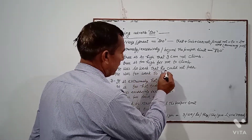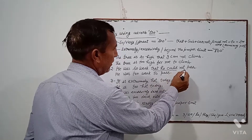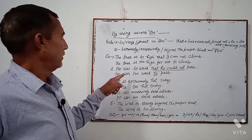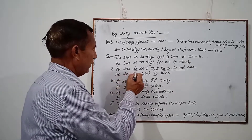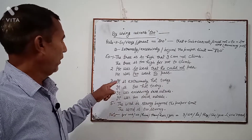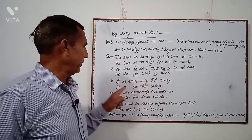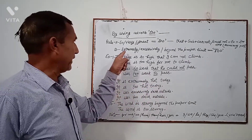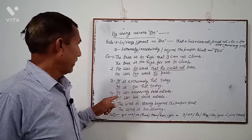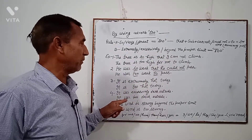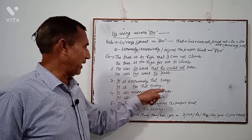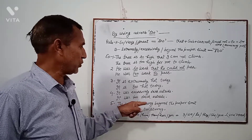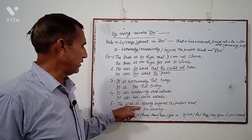'That plus could not' वाले part को हटाकर 'too' का प्रयोग करते हैं, और 'so' को हटाकर 'too' का प्रयोग करते हैं। Example 3: 'It is extremely hot today' → 'It is too hot today.' जैसा कि लिखा है, 'extremely', 'excessively', 'beyond the proper limit' → 'too' में बदल जाता है। 'It was excessively dark outside' → 'It was too dark outside.' 'The wind is strong beyond the proper limit' → 'The wind is too strong.'